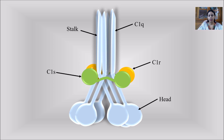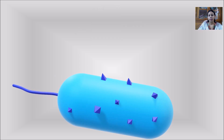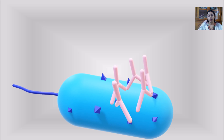We already know that C1, or complement system one, is very complex in structure. It consists of a C1q unit with a globular head-like structure followed by a long tail known as a stalk. It is also associated with two sub-components: two C1r components and two C1s components. When any pathogen enters the body, its surface contains certain antigens or epitopic sites that are recognized by the paratopic site of antibodies.